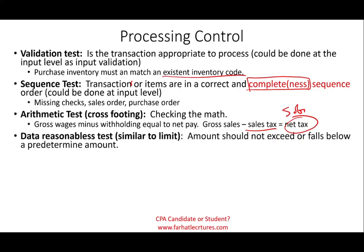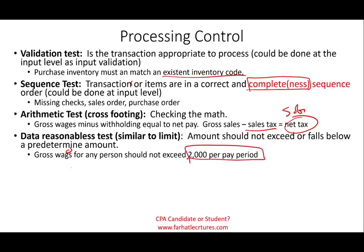We could also have inside the processing control something called a data reasonableness test, similar to a limit test. The amount produced should not exceed or fall below a predetermined amount. A good example would be if we don't pay more than $2,000 per pay period — whether weekly, bi-weekly, or bi-monthly — the system should not be able to generate a paycheck in excess of $2,000. This could be a data reasonableness check or a limit test. If we did not have that limit test at the input level, it could be embedded at the processing level, and when we try to process the transaction, it will stop.